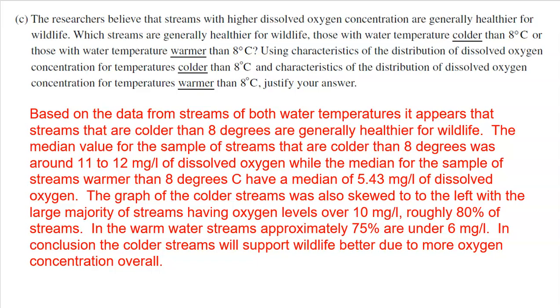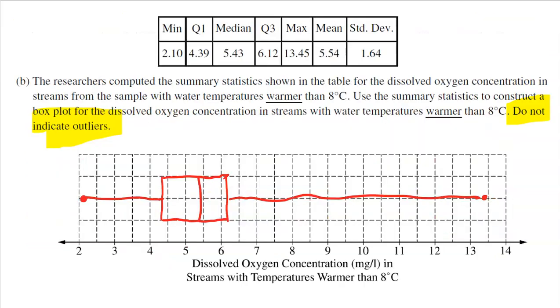So 80% of the streams in our sample were above 10. That's pretty high if we're looking to support healthy wildlife. Then I also commented that the shape of the warmer streams was skewed to the right. Now here we actually see that 75% are under 6 milligrams per liter. Where did I get that from? Well, I went back to Q3. Q3 is the 75th percentile.